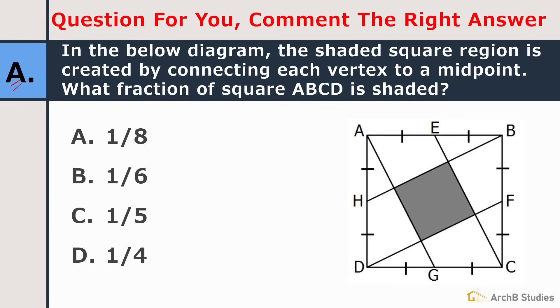Now this question is for you. In the below diagram, the shaded square region is created by connecting each vertex to a midpoint. What fraction of the square ABCD is shaded? These are the midpoints of the sides of the square ABCD. And these are connected like this. And in the middle, this square is formed. So you have to tell how much part of ABCD is shaded in the form of fraction.